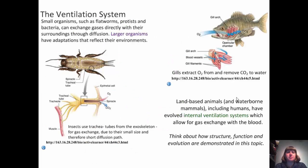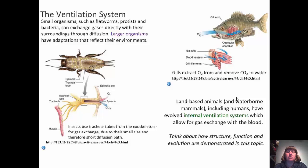Small organisms such as flatworms, protozoa, and bacteria exchange gases directly through their surroundings by diffusion. Larger organisms have adaptations that reflect their environments — such as gills to extract oxygen and remove carbon dioxide to water. Insects use trachea tubes from the exoskeleton for gas exchange due to their small size and short diffusion path. Land-based and some water-borne mammals, including humans, have evolved an internal ventilation system. Remember: structure, function, and evolution go hand in hand.